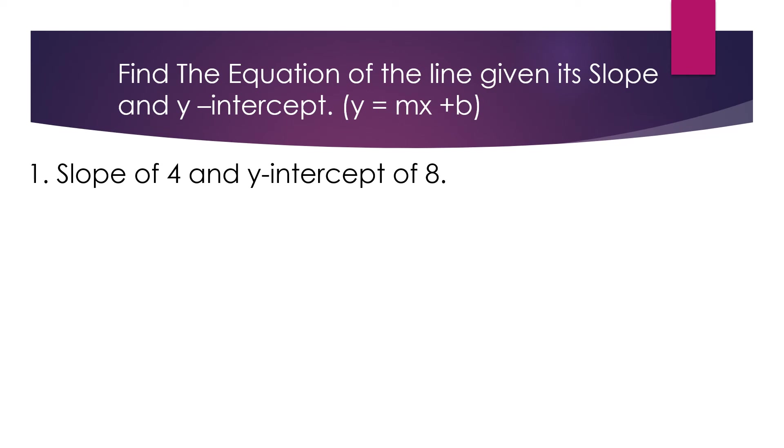In order for us to get the equation of the line, we need the slope. In this case, slope and y-intercept. So, we have slope of 4 and y-intercept of 8. So, what is now the formula? y is equal to mx plus b. So, very easy. Just replace the m with 4, which is the slope. And then, y-intercept of 8, that is the value of b. So, this is now the equation of the line in slope-intercept form.